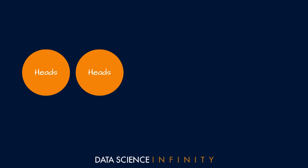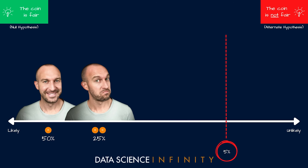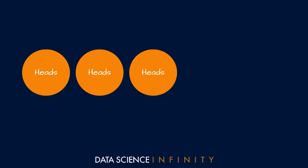Pete flips a second time and it is again heads — two in a row. The chance of this happening randomly with a fair coin is 25 percent, still pretty likely. That's less likely than one head in a row, but nothing to raise suspicion — perhaps enough to raise an eyebrow. Since 25 percent is well above the five percent threshold, I'm still holding the view that the null hypothesis is the most likely scenario.